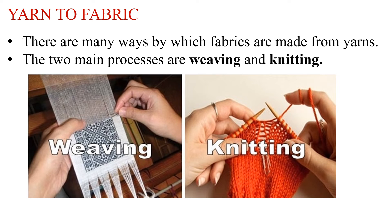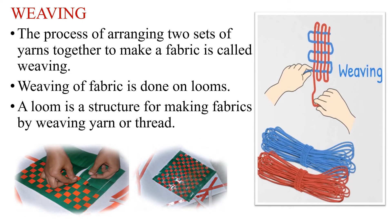How are these yarns converted to fabrics? There are a variety of methods for making fabrics from yarns. The two main methods are weaving and knitting. The process of arranging two sets of yarns together to make a fabric is called weaving. Weaving of fabric is done on looms. A loom is a structure for making fabrics by weaving yarn or thread, which is used to give support to your weave.